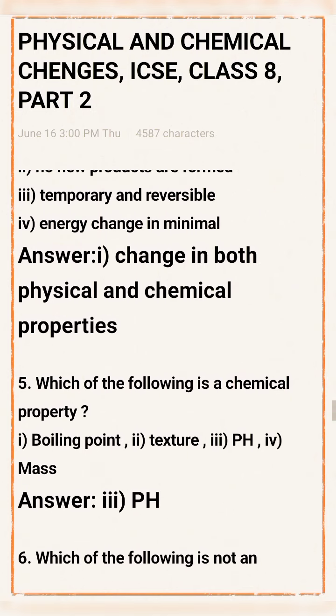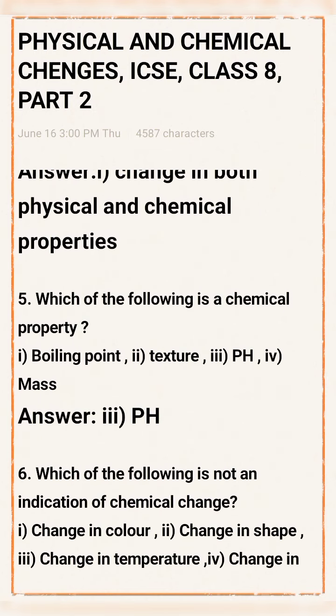Question 5: Which of the following is a chemical property? Option 1: Boiling point. Option 2: Texture. Option 3: pH. Option 4: Mass. Answer: Option 3 — pH is the right answer.